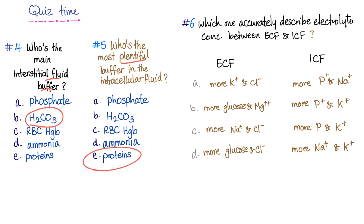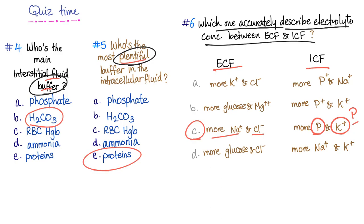We haven't discussed the buffer systems yet, but keep those two pieces of information in mind. Then, let's go to this one. Which one accurately describe electrolyte concentration between ECF and ICF? And the answer here is c. In the ECF, there is more sodium and more chloride. In the intracellular fluid compartment, there is more phosphate and more potassium. They start with a p.